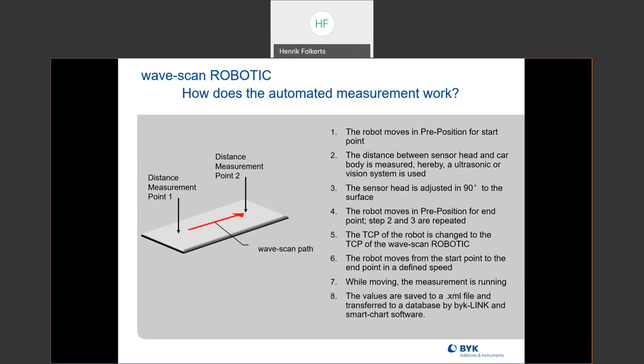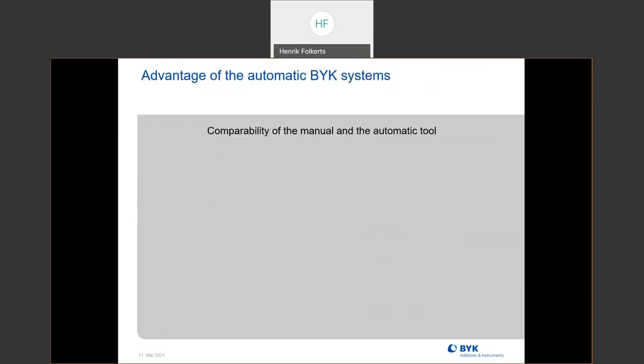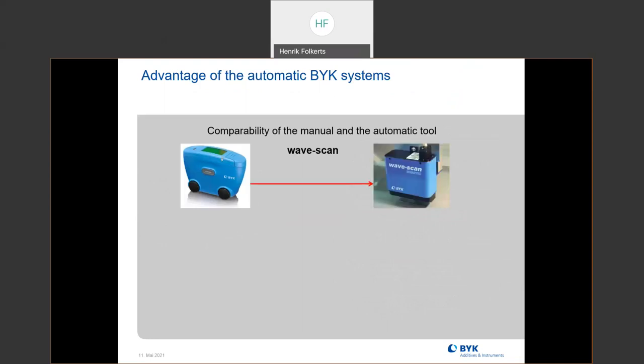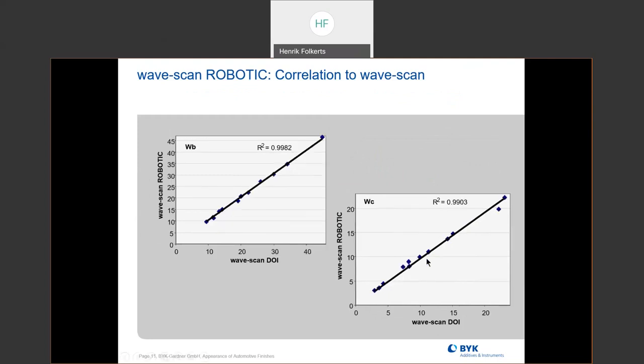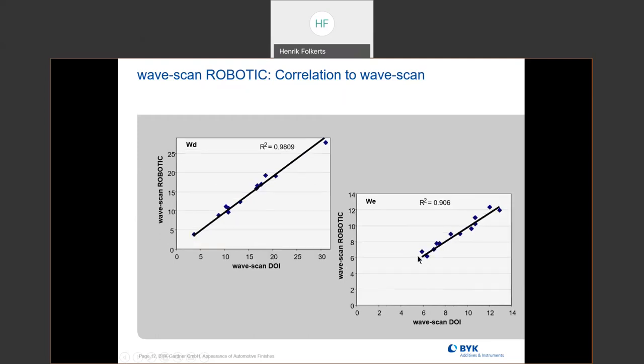All the data can go into Smart Chart. So if you're using wave scan handheld and wave scan robotics, you can have all the data go into the same exact database. We did some studies to make sure we had a correlation. The dullness is pretty good, WA is really good, WB very consistent, WC very consistent, WD also very consistent, and WE very consistent. This ensures that whether you're measuring with a handheld or a robotic, you're getting the same information.